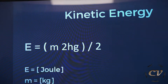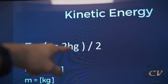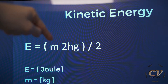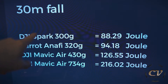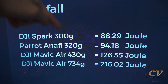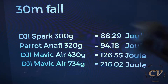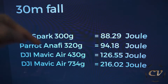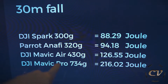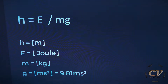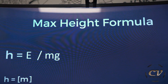Let's get to a few examples at 30 meters after the fall. We know g, and h is 30. So check this out: the DJI Spark at 300 grams equals 88 joules. Parrot Anafi, which is my drone, comes in at 94 joules. DJI Mavic Air at 126 joules. And the Mavic Pro — sorry, slight mistake there — comes in at 216 joules.